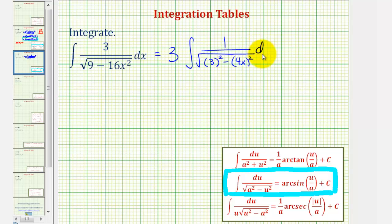Notice in this form, we can more easily identify that a equals three, and u equals four x.